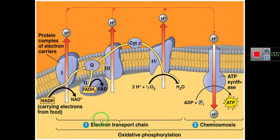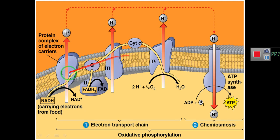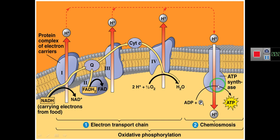The electron transport chain is the shuttling of electrons produced by NADH and FADH2. These molecules are produced during the Krebs cycle, and they generate electrons that shuttle via enzyme complexes embedded in the inner mitochondrial membrane. These electrons are finally utilized to pump protons. Electron transport chain is a chain linkage of electrons via different enzyme complexes, ultimately used for the synthesis of ATP.